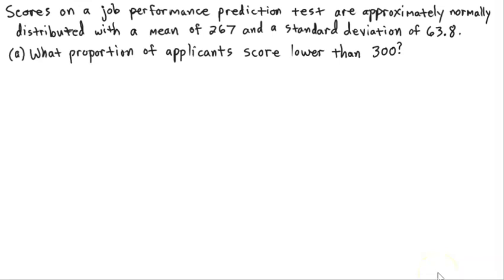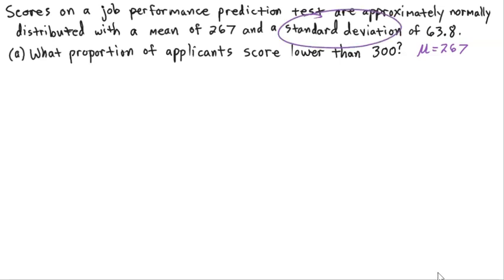In this video, we're going to do a few examples, all based on just this situation, so we can have good skill with using and understanding the normal distribution. Scores on a job performance prediction test are approximately normally distributed, so we're going to use the normal distribution curve, with a mean of 267 and a standard deviation of 63.8.